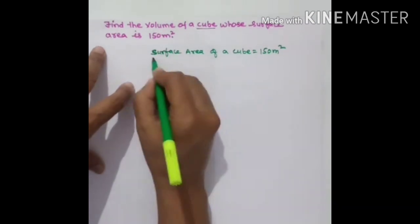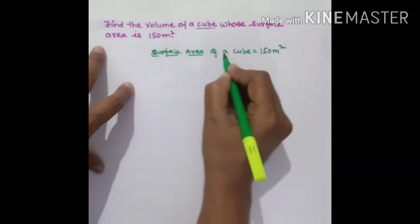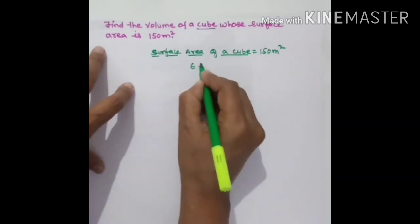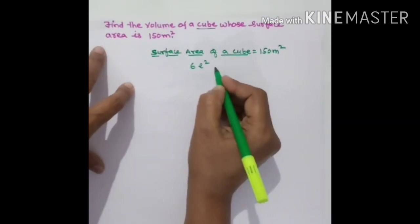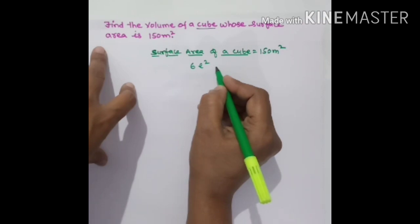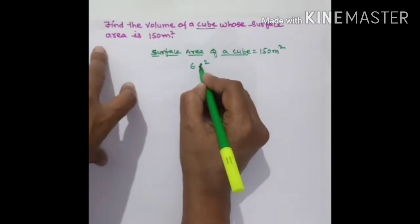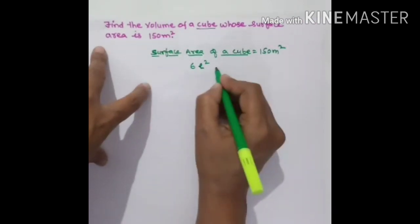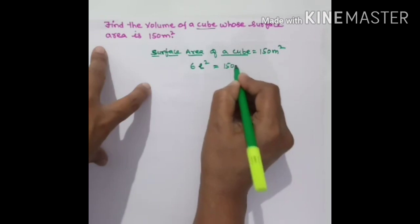What is the formula for surface area of a cube? It is 6L². The cube has all edges equal: length equals breadth equals height. It has 6 faces, so total surface area equals 6L² = 150 meter square.